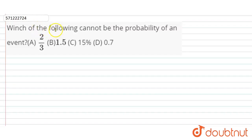Hi students, our question is which of the following cannot be the probability of an event? A: 2/3, B: 1.5, C: 15%, and D: 0.7.